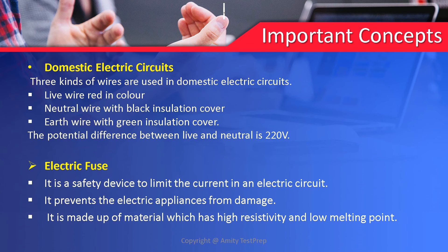The last topic is electric fuse — what is electric fuse, why it is used, and what material it is made of. Electric fuse is a safety device used to limit the current in an electric circuit; it prevents electric appliances from damage. It is made of material with very high resistivity and very low melting point — ideally an alloy of copper and tin, though a copper electric fuse can also be used. The electric fuse must be connected in series with the circuit.